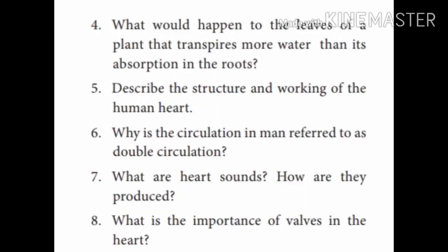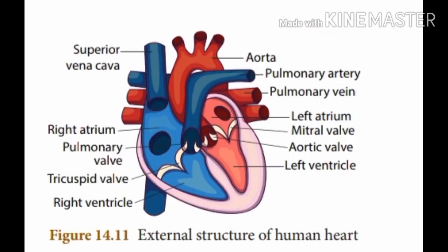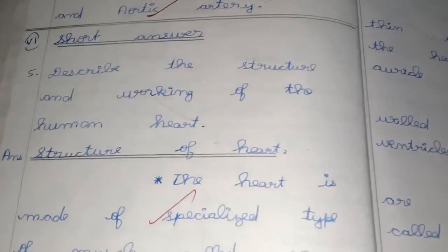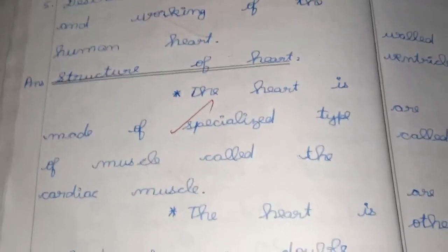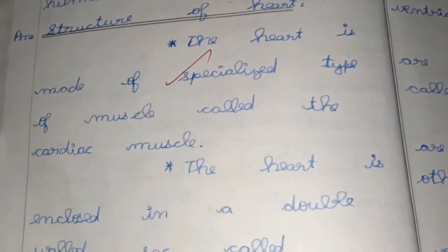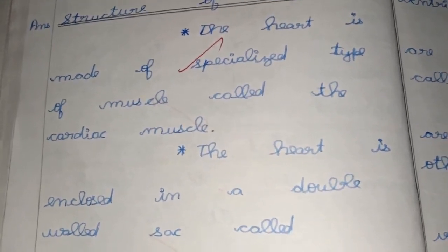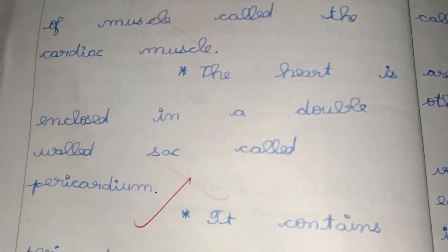Next question: Describe the structure and working of the human heart. This is a 5-mark question — both structure and working are big answers. You should know the parts of the heart. Now let's go into the structure. The heart is made up of a specialized type of muscles called the cardiac muscles. The heart is enclosed by a double membrane called the pericardium.